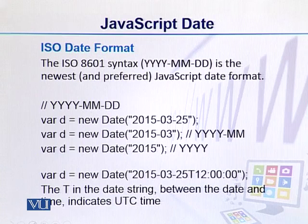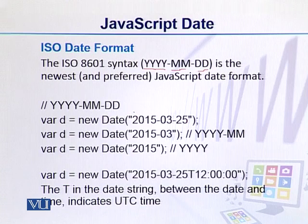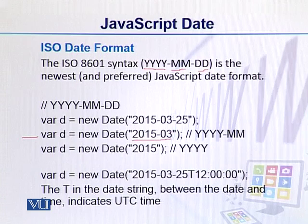The ISO date format is the standard syntax. We have the year mentioned first, then month, and then date. The year uses four characters, the month uses two, and the date uses two. We can also omit the date and provide only the year and month. The important thing to remember is that the year will always come first, then month, then date.